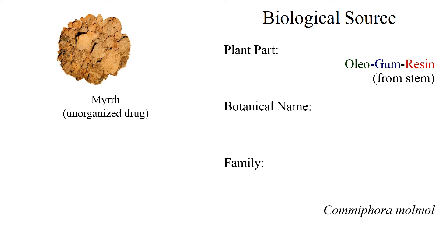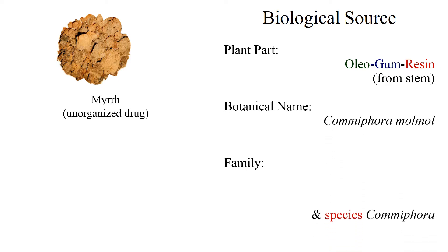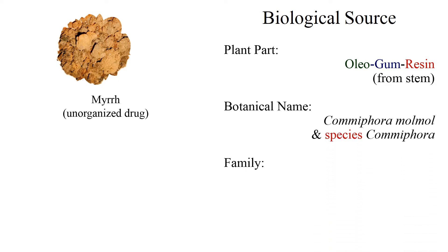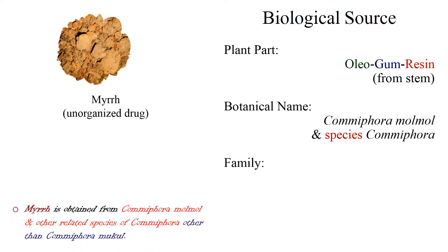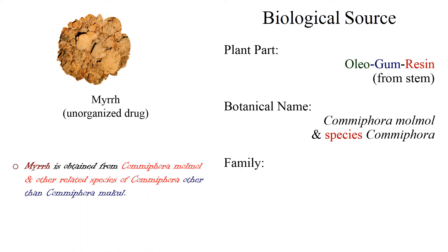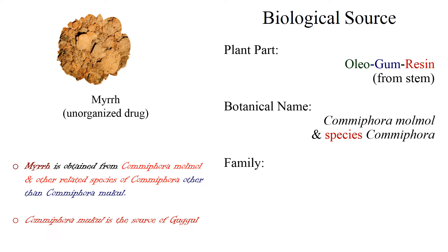The botanical name: Myrrh is obtained from Commiphora molmol and other related species of Commiphora, other than Commiphora mukul. Commiphora mukul is the biological source of Guggul.